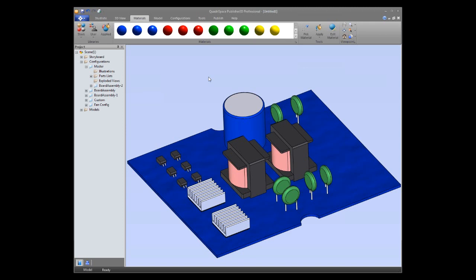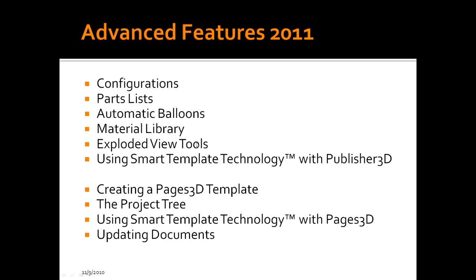That's a wrap on the configuration topic. It's going to be tough to get through all these topics so rapidly — we may have to schedule a follow-on session. Moving on: parts lists. We're going to go through what you can do with parts lists and the parts list editor, and also merge in the automatic balloons topic since that's a quick demonstration of how to manipulate balloons based on a parts list.